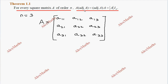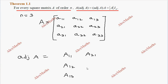The cofactors of the first row are capital A₁₁, A₁₂, A₁₃. The cofactors of the second row are A₂₁, A₂₂, A₂₃. The cofactors of the third row are A₃₁, A₃₂, A₃₃. So this is the adjoint matrix.